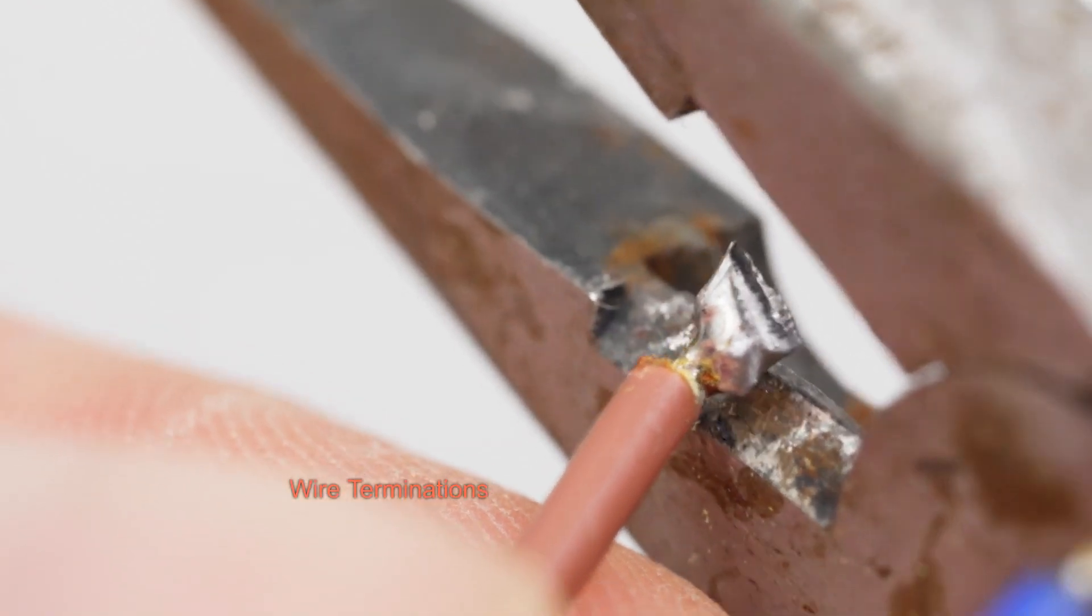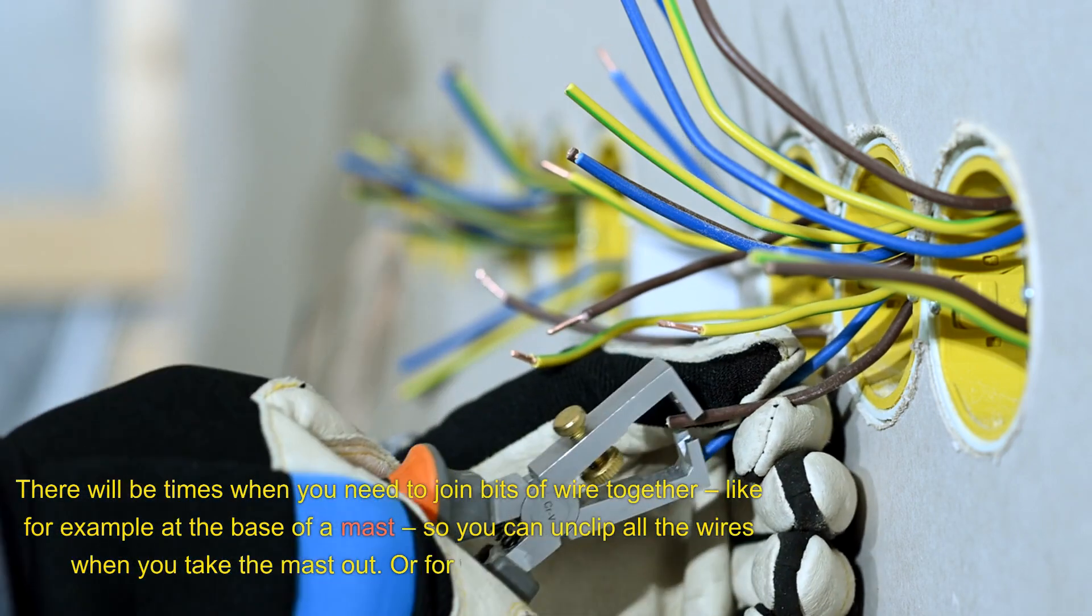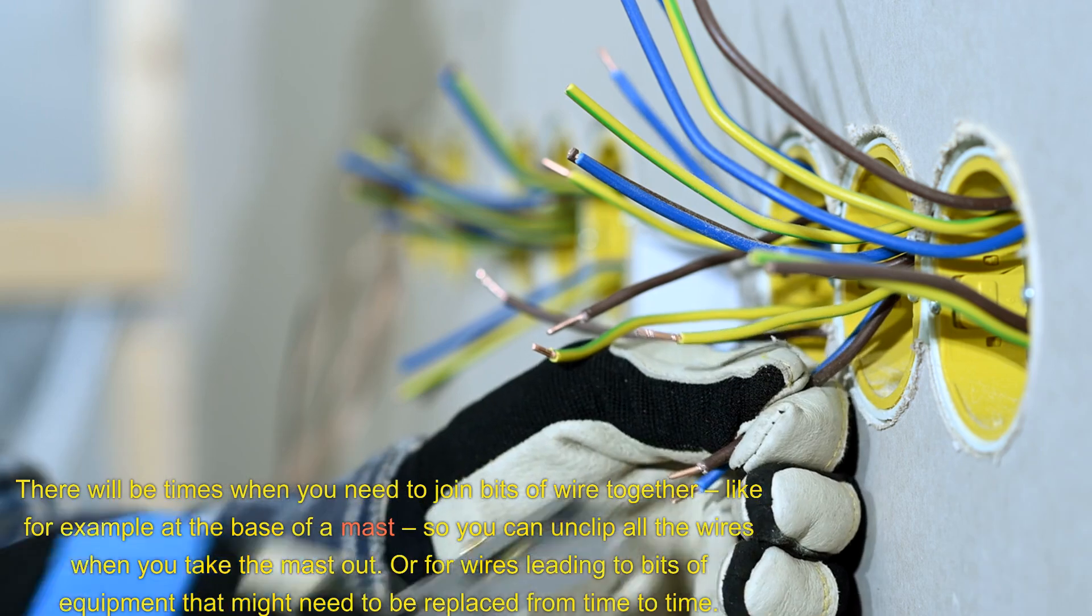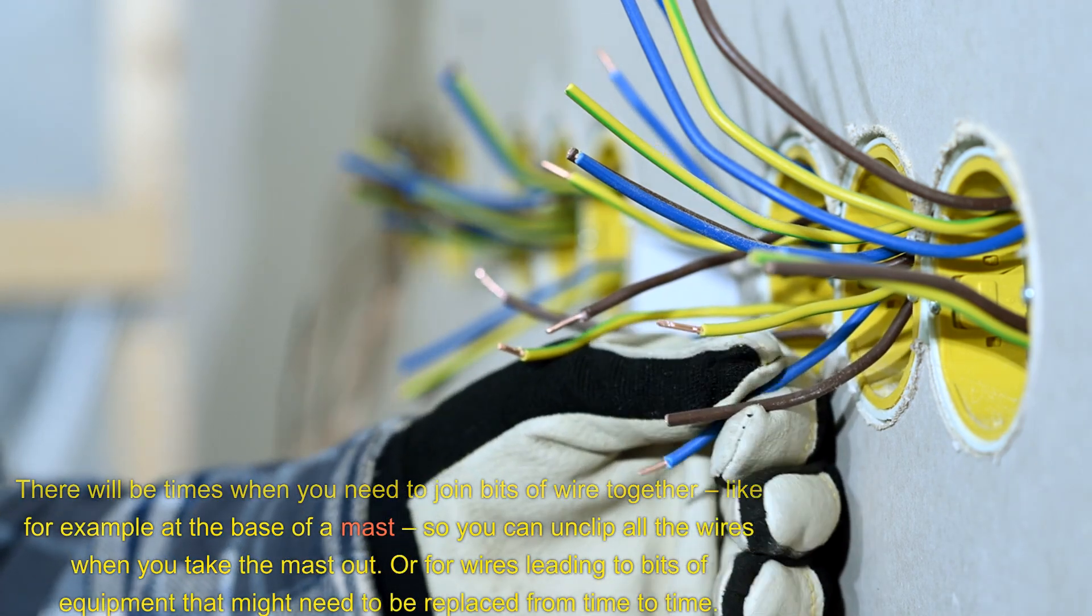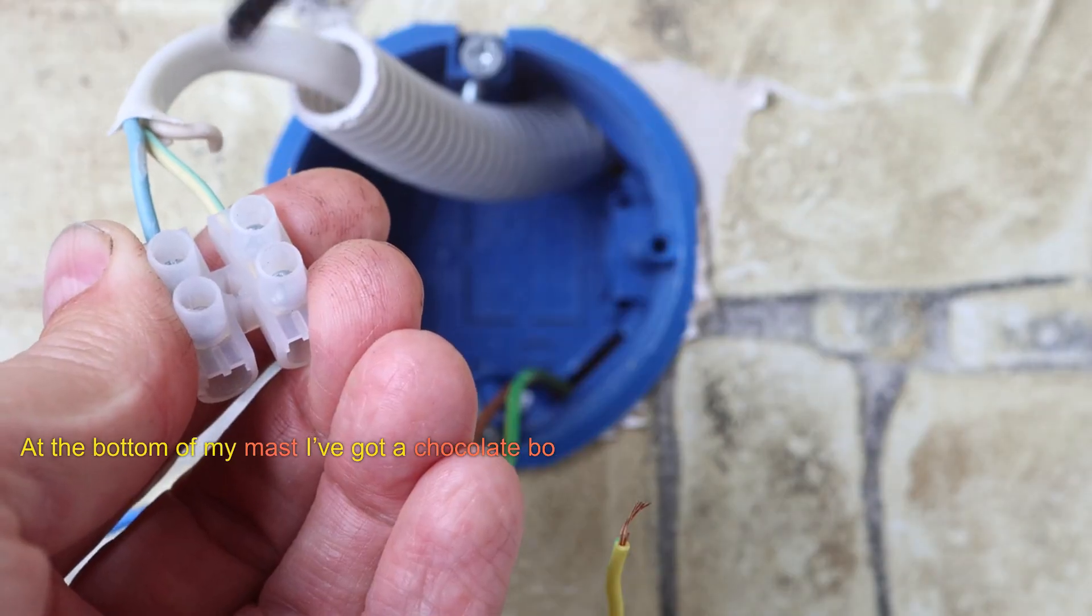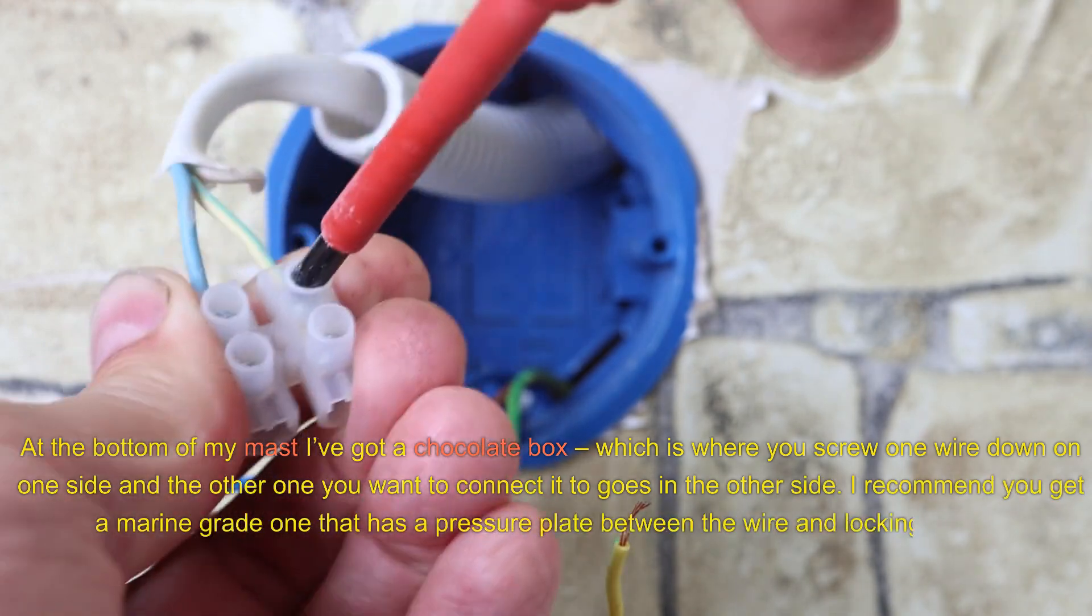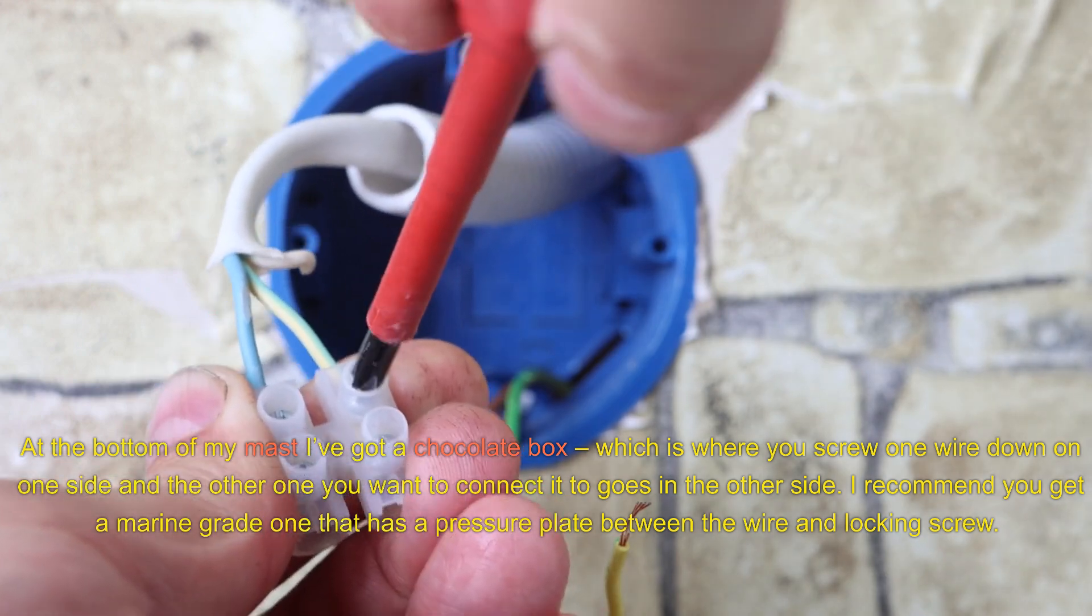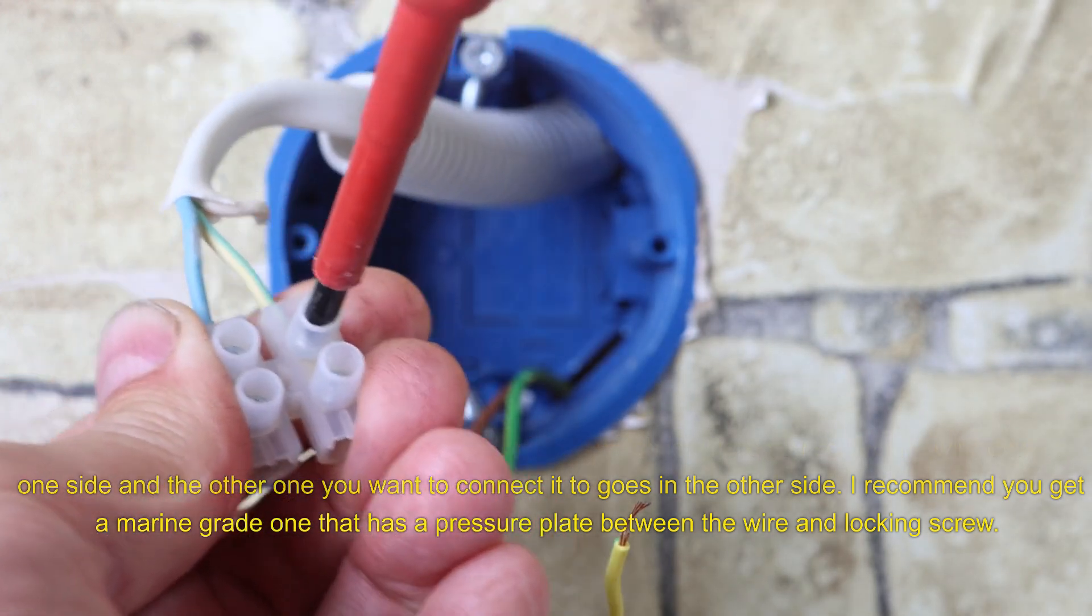Wire terminations. There will be times when you need to join bits of wire together, like for example at the base of a mast, so you can unclip all the wires when you take the mast out, or for wires leading to bits of equipment that might need to be replaced from time to time. At the bottom of my mast, I've got a chocolate box, which is where you screw one wire down on one side, and the other one you want to connect it to goes in the other side.